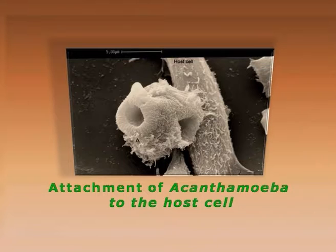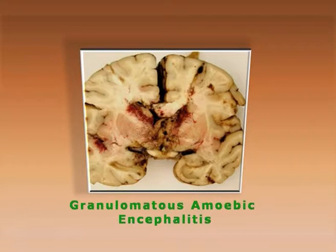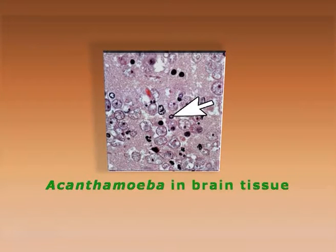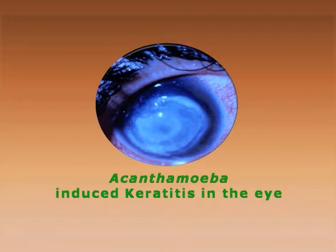Acanthamoeba was described by Culbertson in 1958, and it commonly causes the dreadful disease of GAE, or granulomatous amoebic encephalitis. Acanthamoeba infection in the brain produces lesions in the central part of the cerebral cortex, and it multiplies and damages the brain tissue, causing swelling. Acanthamoeba is not only affecting the brain — it can also cause deposition of keratin in the eye and lung. This Acanthamoeba-induced keratitis in the human eye causes blindness.